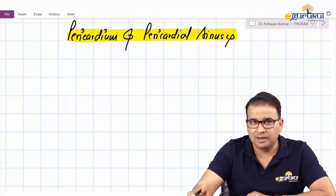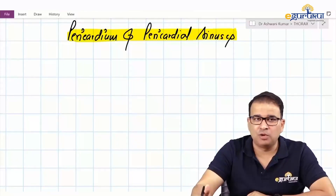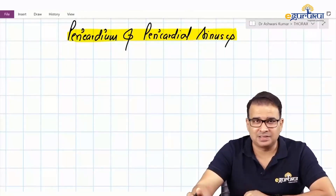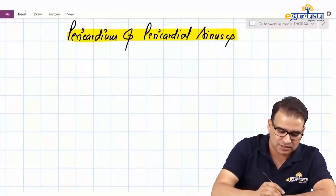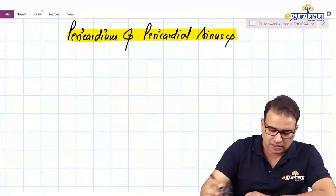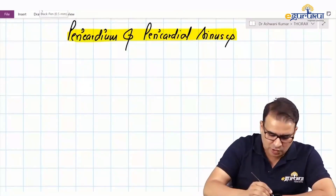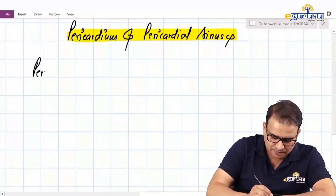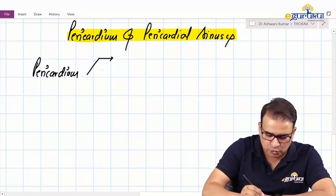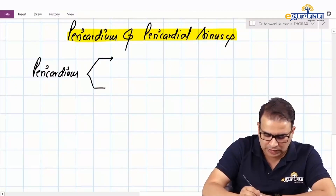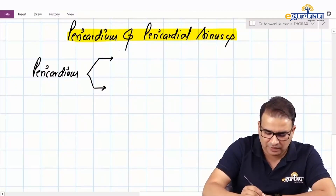Before moving to the heart, let us first talk about the pericardium and then pericardial sinuses — something which holds good clinical importance. When we talk about pericardium, the covering of the heart, there are two types of pericardium: we have a fibrous pericardium and a serous pericardium.